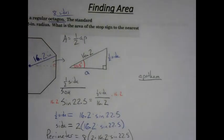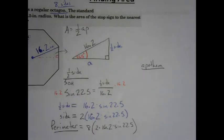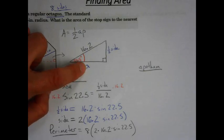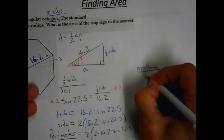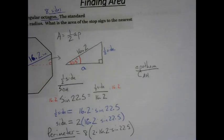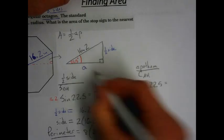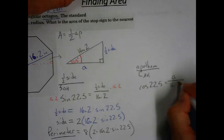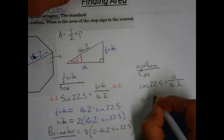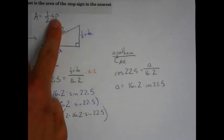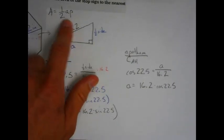Let's find our apothem. We look at our triangle — we have an angle, the apothem, and the hypotenuse. The apothem is the adjacent side. So we have an adjacent side and a hypotenuse, which means we use cosine — SOHCAHTOA. The equation will be: the cosine of 22.5 equals the apothem over the hypotenuse, 16.2. Which means our apothem is 16.2 times the cosine of 22.5. We have now found our apothem and our perimeter — we are ready for area.